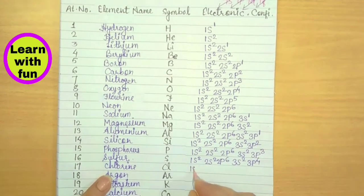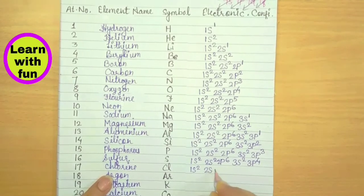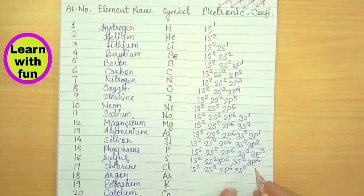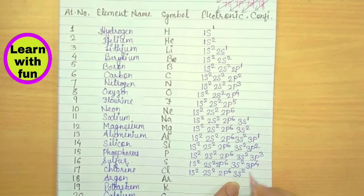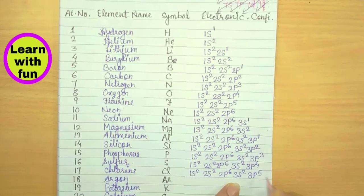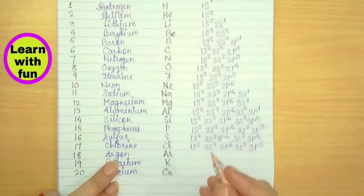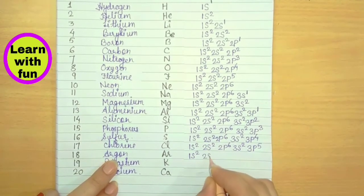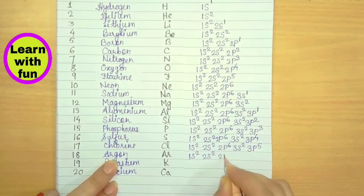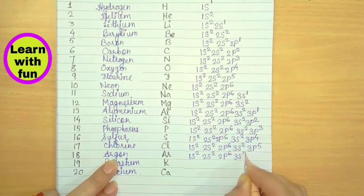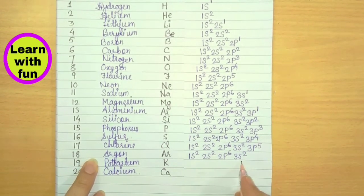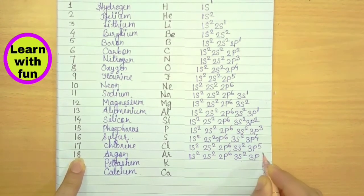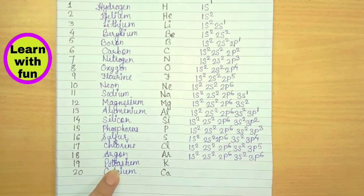Chlorine has 17 electrons: 1S2, 2S2, 2P6, 3S2 fills 12 electrons, and the remaining 5 go into 3P5. Argon has 18 electrons: 1S2, 2S2, 2P6, 3S2 fills 12, and all 6 remaining electrons go into 3P6, completing the third shell.